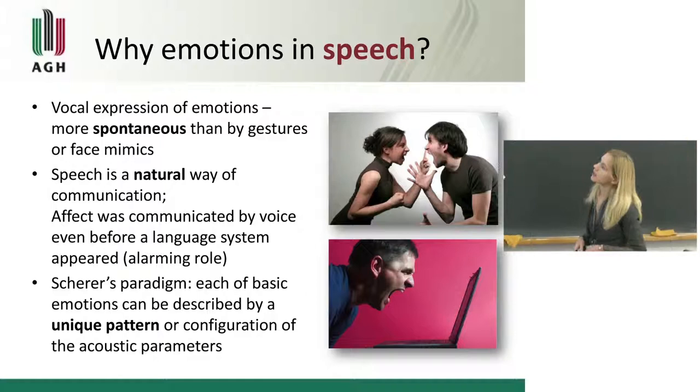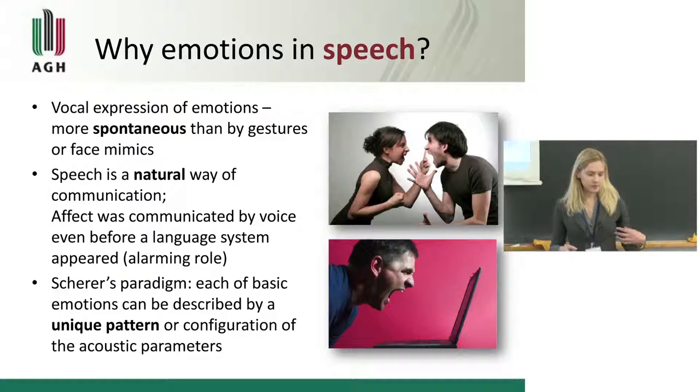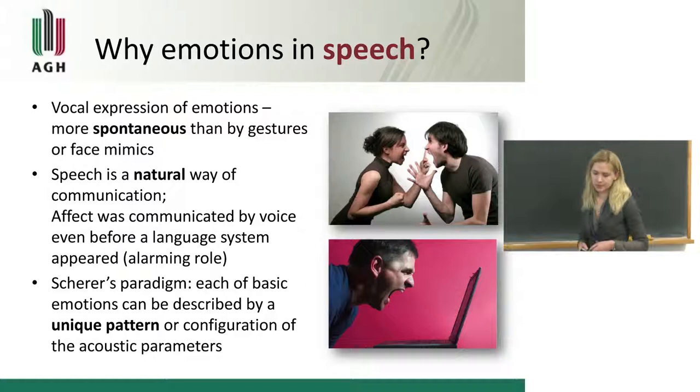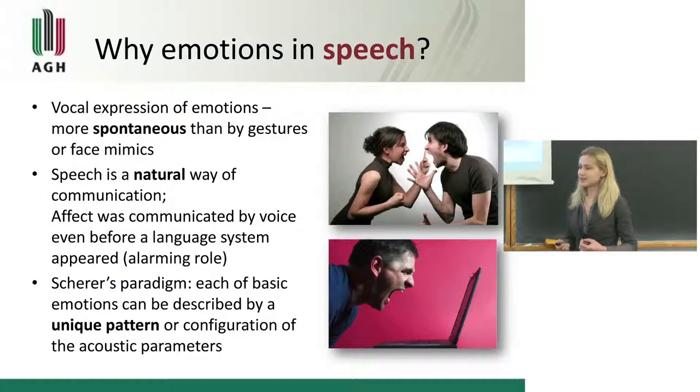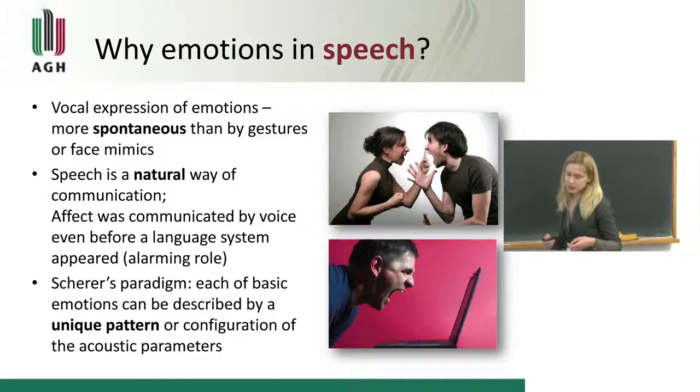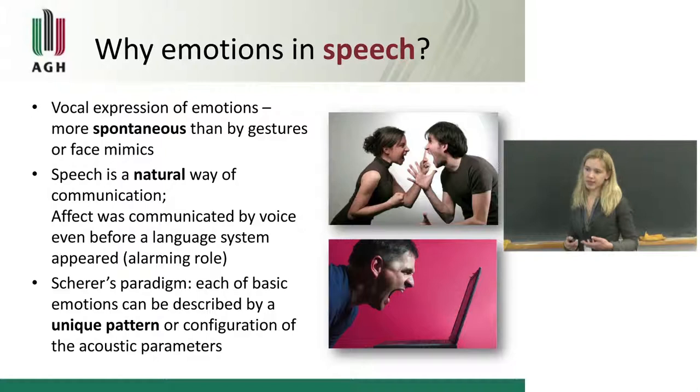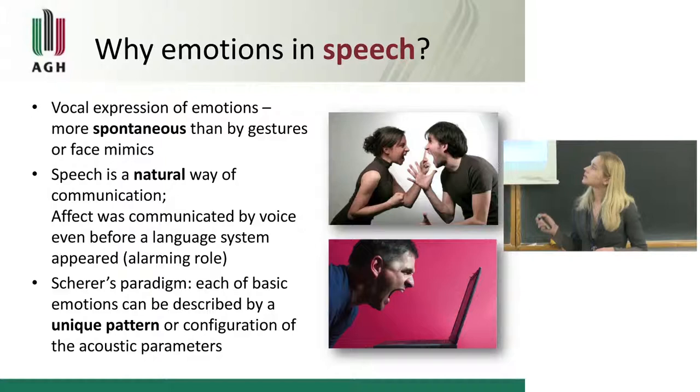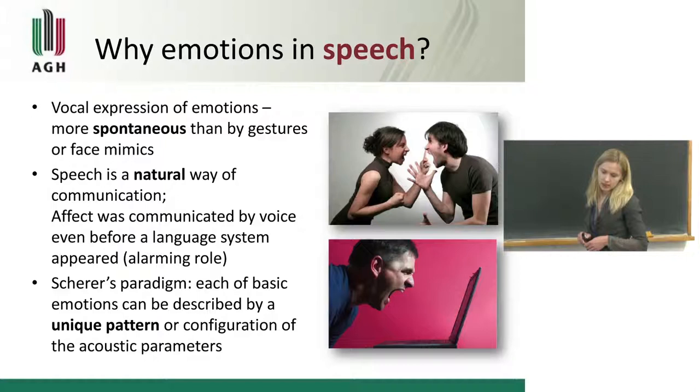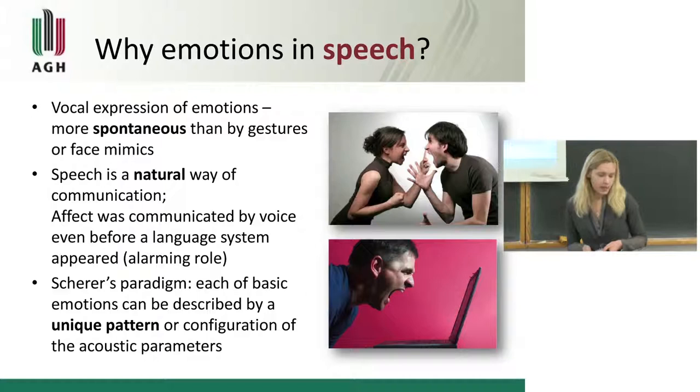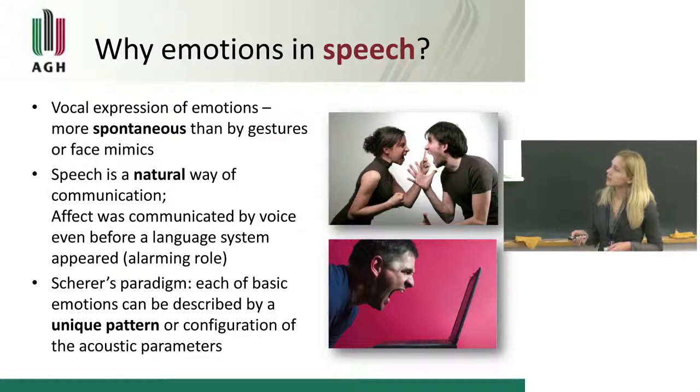Then why emotion in speech? Vocal expression of emotions is considered as being very natural, very spontaneous and difficult to control. For example now, as I'm being a little stressed and a little excited, I have faster heartbeat rate and breathing rate, and all this affects my vocal tract and vocal folds. So my voice is trembling and it's really difficult for me to control it. Another thing is that speech is for us very natural way of communicating and there are scientific theories that affect was transferred by voice even before any language system appeared in human history, mainly thanks to its alarming role.